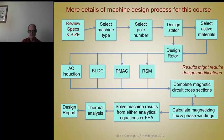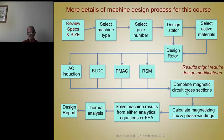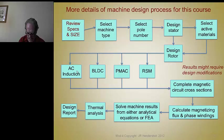For any of those, you have to complete the magnetic circuit cross section, which means determining — once you've selected the active materials and pole number — how much flux you have per pole, then designing the laminations to have the right cross section to carry that flux per pole without saturation. In the case of the induction motor, your peak torque determines the maximum magnetizing flux and the maximum magnetizing current. In the rotor design, you have to balance the cross-sectional area of the copper for the cage with the cross-sectional area of the steel to carry the flux for peak torques.